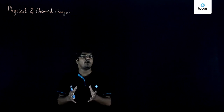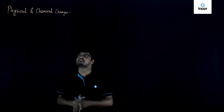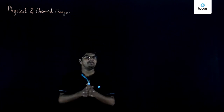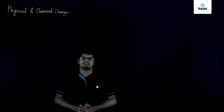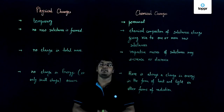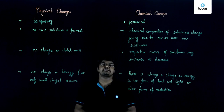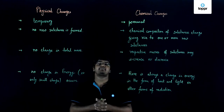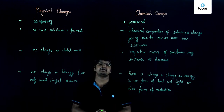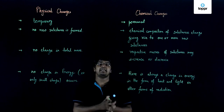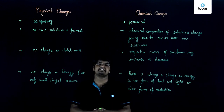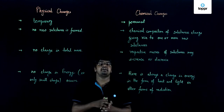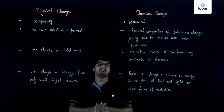So let us now discuss all the characteristics of physical and chemical changes. The first characteristic of physical change is that physical changes are temporary. That is, after a physical change occurs, we can get back to the original substance by reversing the reaction.